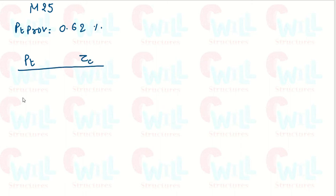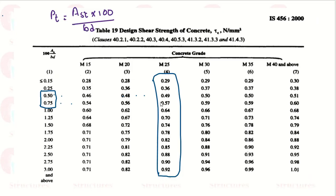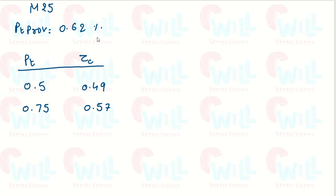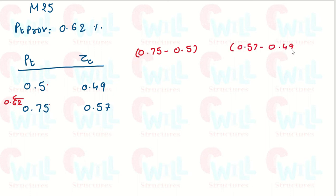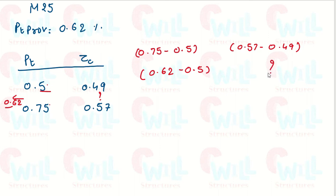Let's do the interpolation. We are using M25 and PT provided is 0.62%. Setting up a table with PT and the corresponding tau c values for grade M25: for PT = 0.5, tau c = 0.49; for PT = 0.75, tau c = 0.57. We need to find tau c for PT = 0.62, which lies between these two values. We subtract the smaller from the larger: 0.75 − 0.5 for PT, and the corresponding tau c difference 0.62 − 0.5.